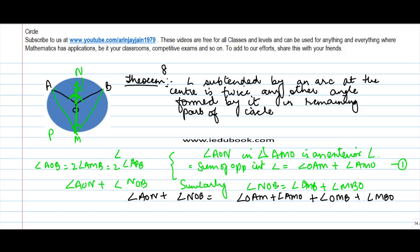Or you can write angle AMO plus angle OMB. But now if you notice, you know that angle AMO plus angle OMB is definitely equal to this angle. So how do you prove that the sum of these two is also equal to this? Let's see.